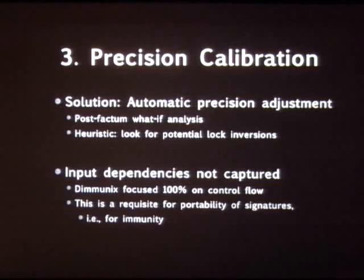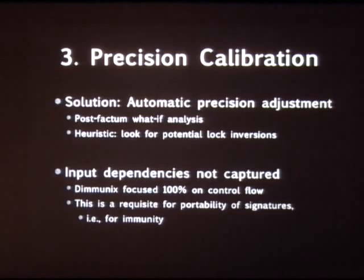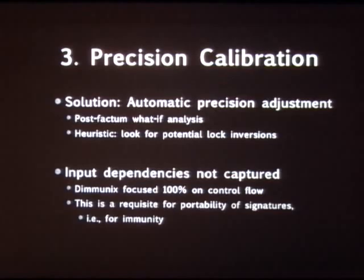With respect to input dependencies, we do not deal with them. Concrete program state changes during an execution and from one execution to the next — lock IDs, thread IDs — so we cannot capture them inside signatures, or else the signature in a subsequent run may lead to a false negative, which is a lot worse than a false positive. So we capture only control flow information and pay the cost of some false positive rate due to input dependencies. In practice, running benchmarks on real systems like MySQL, we see very few false positives caused by inputs.